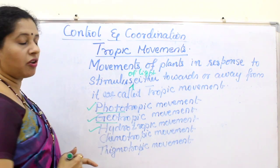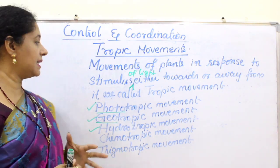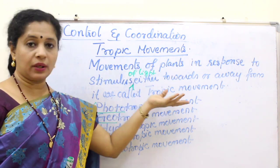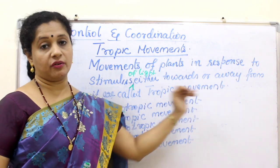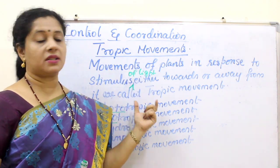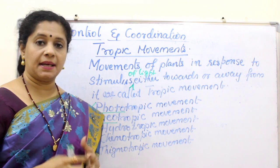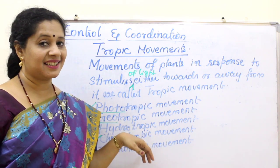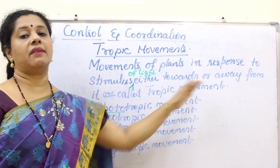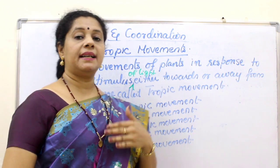Next is hydrotropic movement. Hydro relates to water, and plants generally always grow towards water. Movements of plants in response to stimulus of water, either towards or away from it, is called hydrotropic movement. Then the last is chemotropic. Chemo means chemicals. Movements of plants in response to stimulus of chemicals, either towards or away from it, is called chemotropic movement.